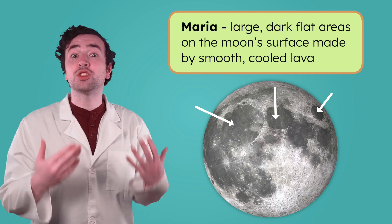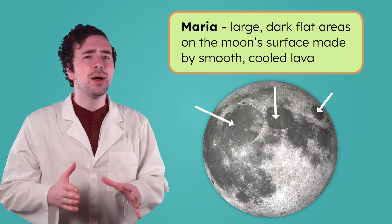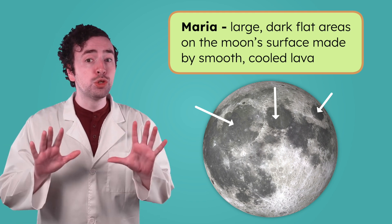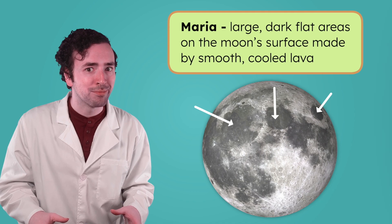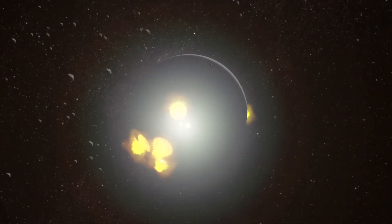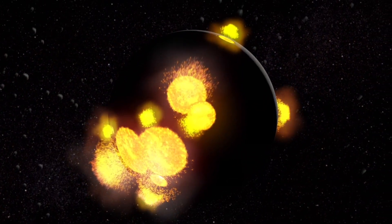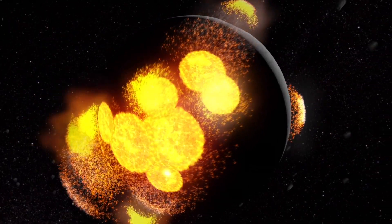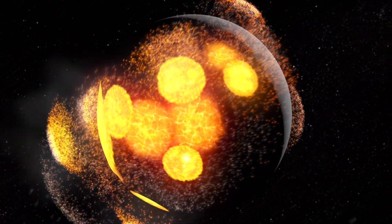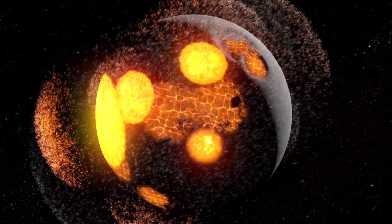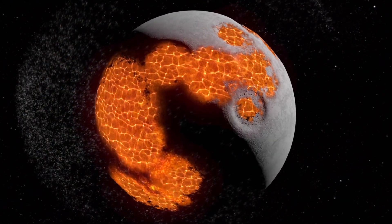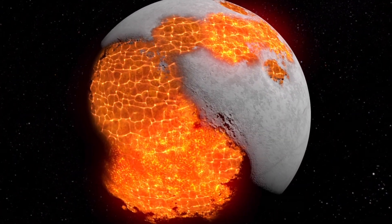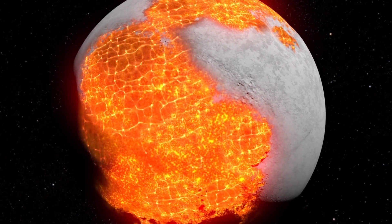From far away, maria look like dark spots or stains, but they're actually huge plains made of smooth-cooled lava. A long time ago, giant space rocks hit the moon with so much force that they made deep cracks in the surface. Hot, melted rock from inside the moon came bubbling out. It spread across the ground and eventually cooled and hardened into flat, dark rock.